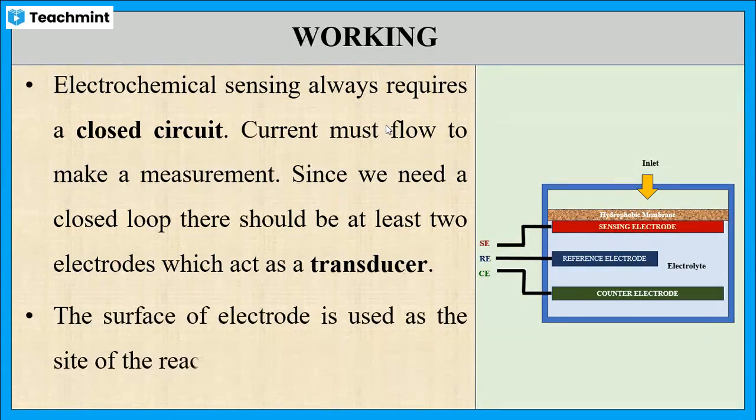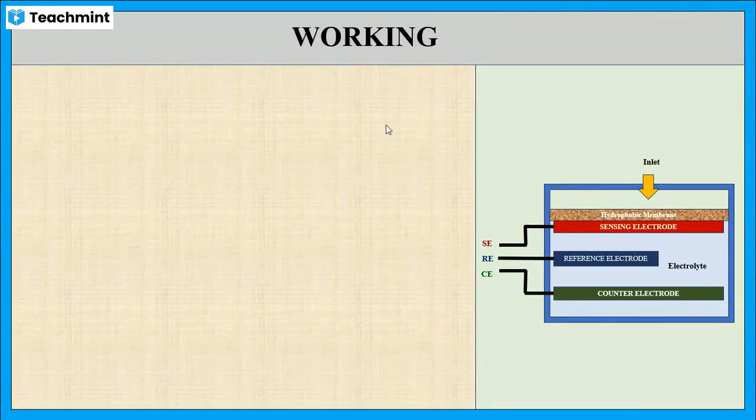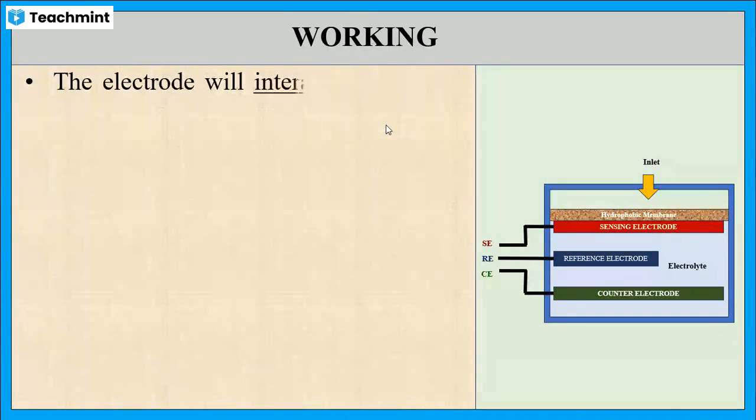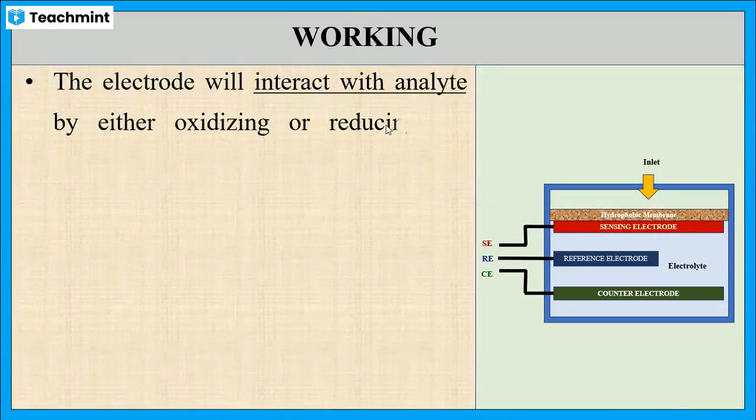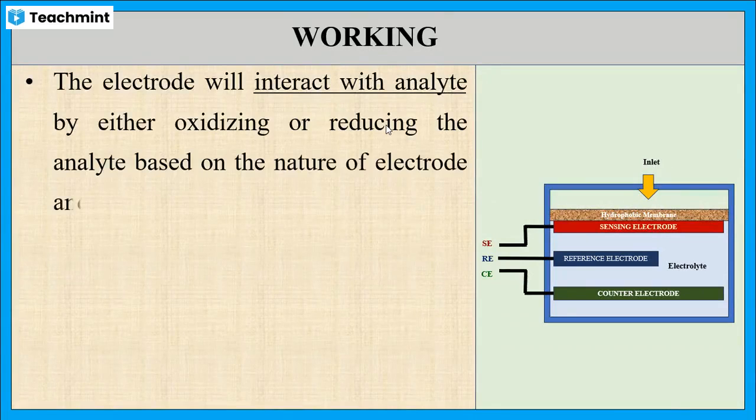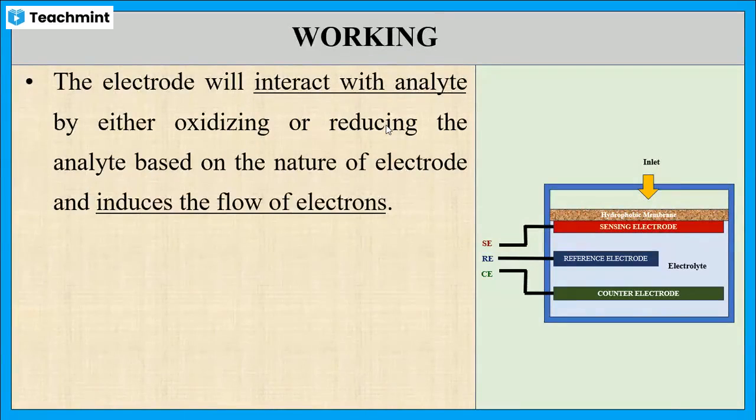Here, the surface of one of the electrodes is used as the site of reaction, which is named the sensing electrode. This electrode will interact with the analyte and undergoes oxidation or reduction based on the nature of the electrode. That means if it is an anode, it undergoes oxidation.